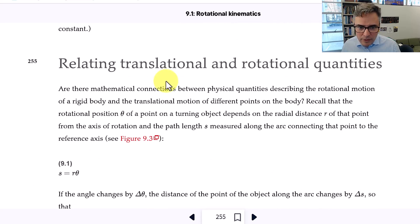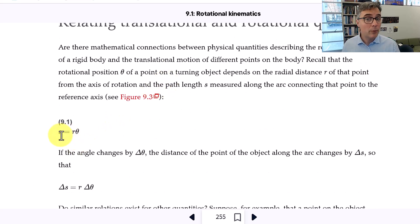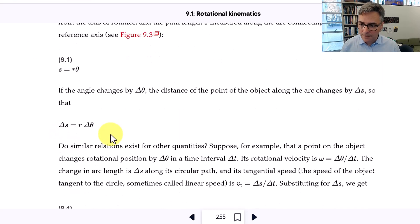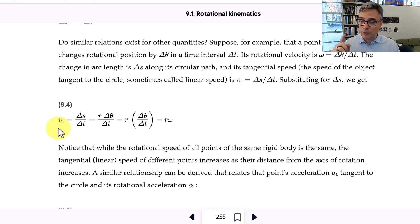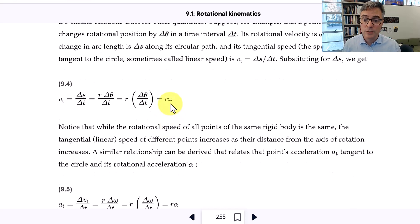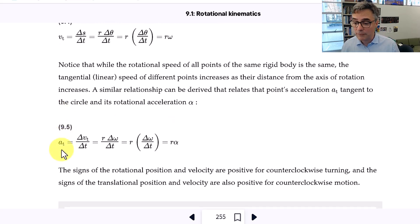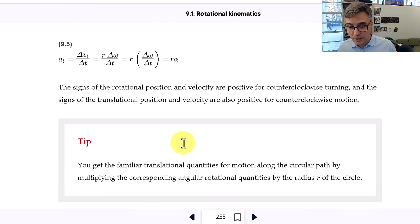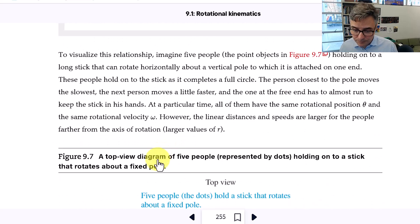And then it relates translational and rotational quantities. So 9.1, we already have that the arc length is r times theta. Next is equation 9.4. The tangential velocity is r times omega, the rotational velocity. So radians per second times r gives you the tangential acceleration. And lastly, equation 9.5 is the tangential acceleration in meters per second squared is equal to r times alpha in radians per second squared. So those are really useful equations.